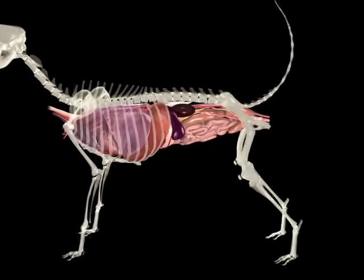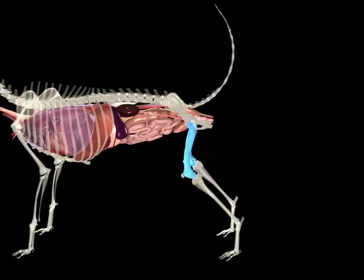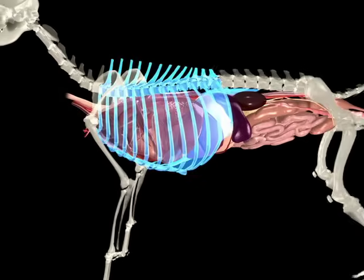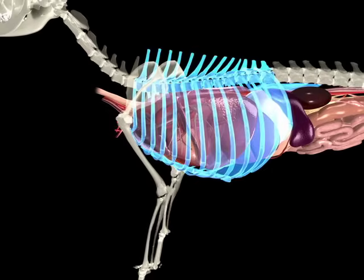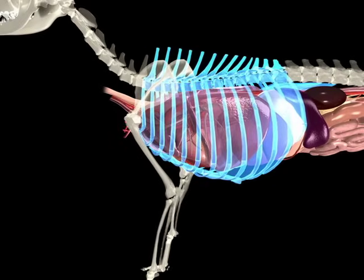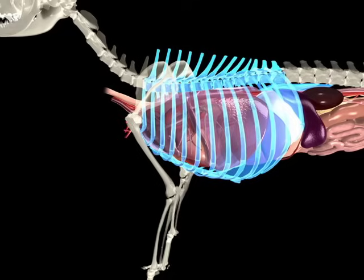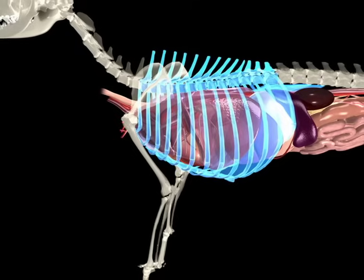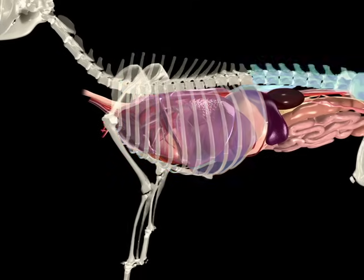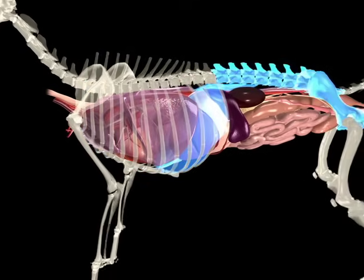The pelvic limbs include the femur, tibia, fibula, tarsus, metatarsus, and digits. The thoracic vertebrae, thirteen pairs of ribs, sternum, and diaphragm form the boundaries of the thorax.